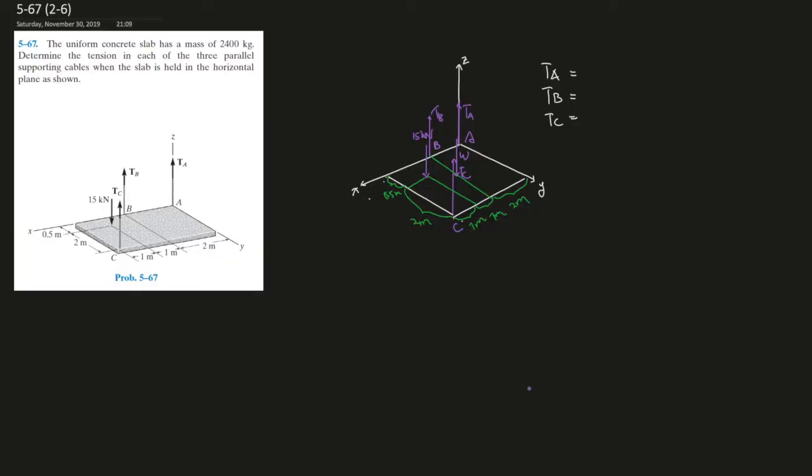I can assist you or tutor you more if you have more questions, just email me. The sixth question from the second set of chapter five says the uniform concrete slab has a mass of 2400 kg. Determine the tension in each of the three parallel supporting cables when the slab is held in the horizontal plane as shown.